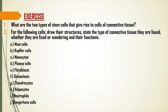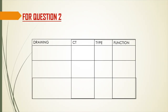After the slides, answer the exercises. Question one: what are the two types of stem cells that give rise to cells of connective tissue? Read Tranquilla Chapter Five for answers. Question two: for the following cells, draw their structures, state the type of connective tissue they are found in, state whether they are fixed or wandering, and their functions. Cells include: mast cells, Kupffer cells, monocytes, plasma cells, fibroblasts, osteoclasts, chondrocytes, adipocytes, neutrophils, and Langerhans cells.